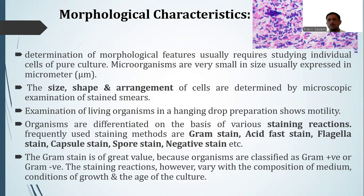We will now discuss the morphological characteristics used in the classification of a particular organism. Determination of morphological features usually requires studying individual cells of a pure culture. Microorganisms are very small in size, usually expressed in micrometers. The size, shape, and arrangement of cells are determined by microscopic examination of the stained smear.